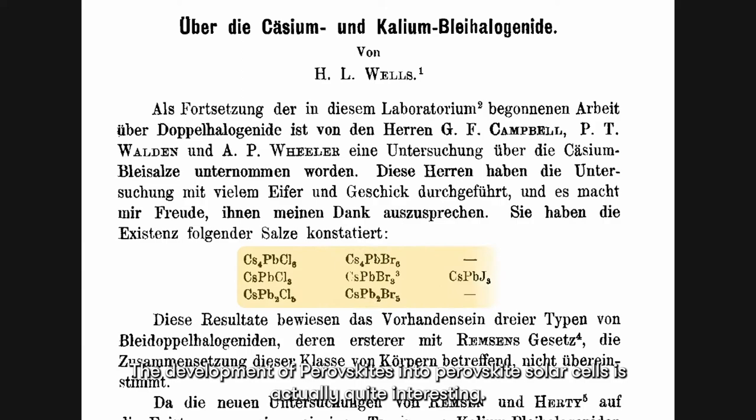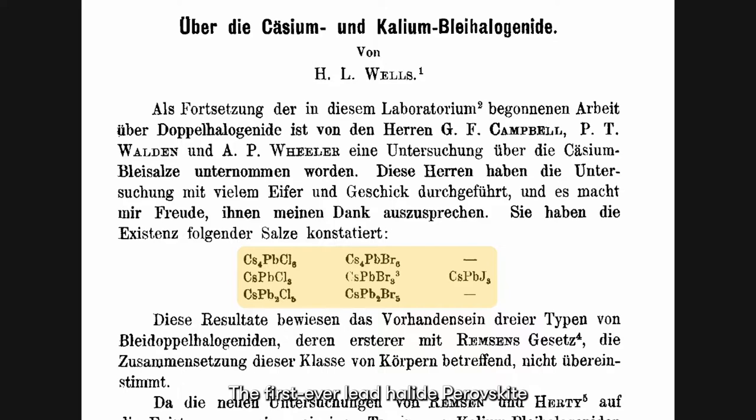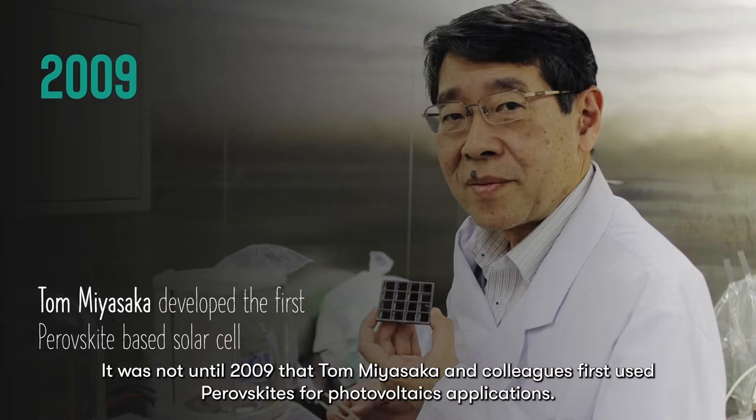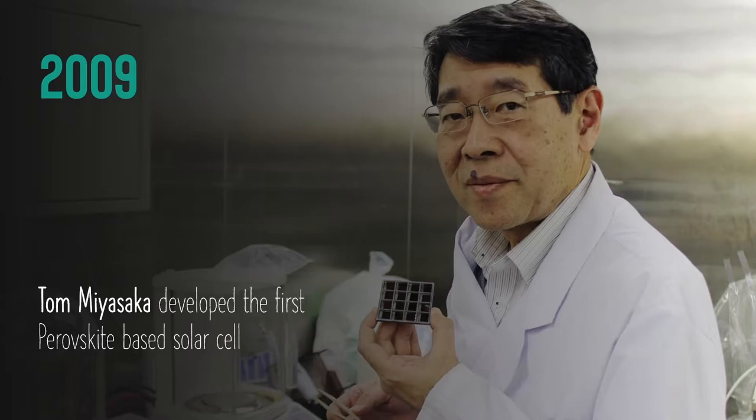The development of perovskites into perovskite solar cells is actually quite interesting. The first ever lead halide perovskite is reported in 1892. These perovskites are cesium-based. It was not until 2009 that Tom Miyazaka and colleagues first used perovskites for photovoltaics applications.